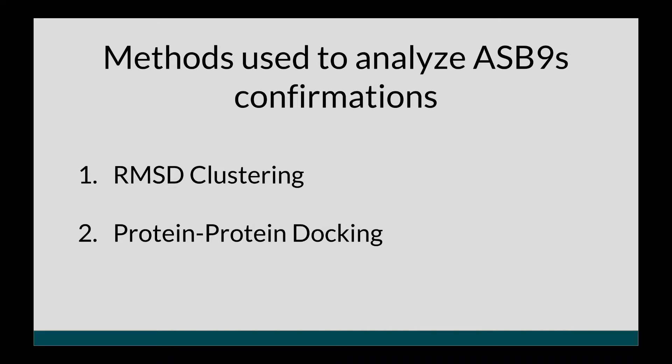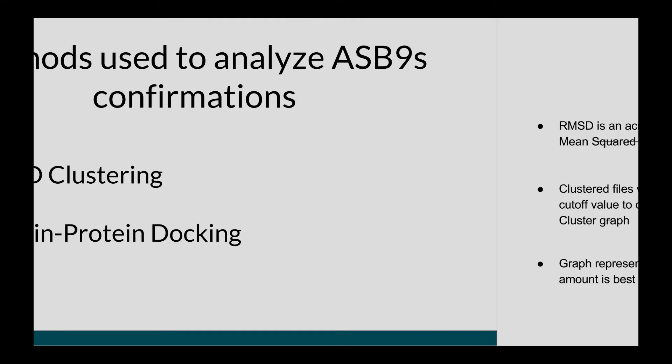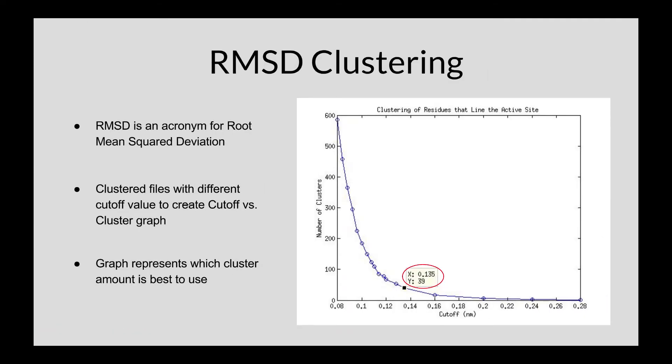Examining these surface changes requires two analysis methods that include RMSD clustering and protein-protein docking. The first step in analyzing my protein was to cluster data from molecular dynamic simulations through RMSD clustering. RMSD is an acronym for root mean square deviation,